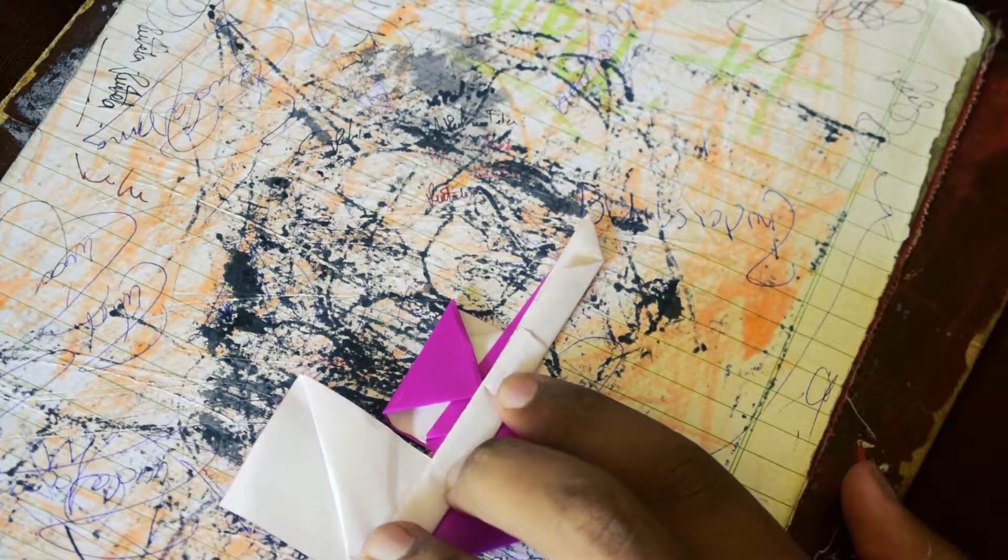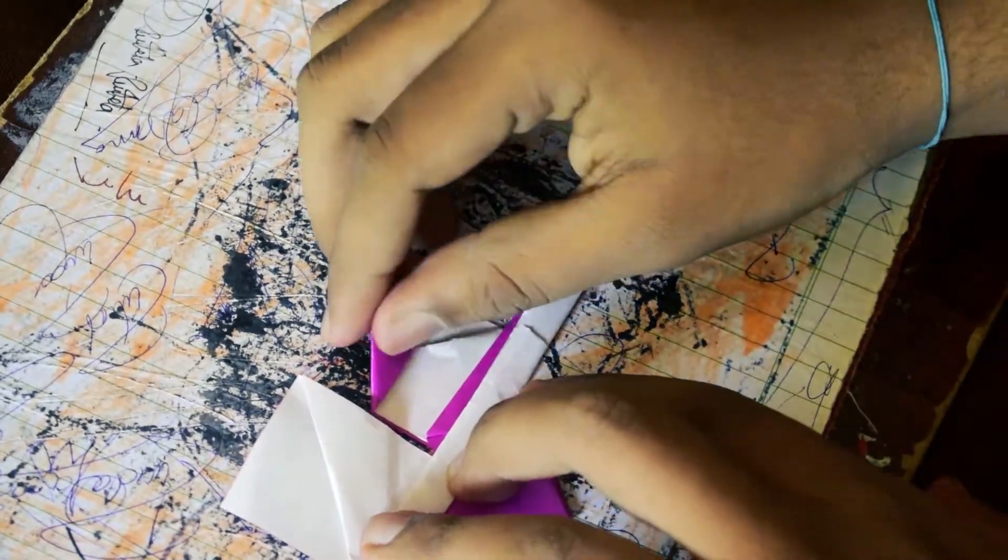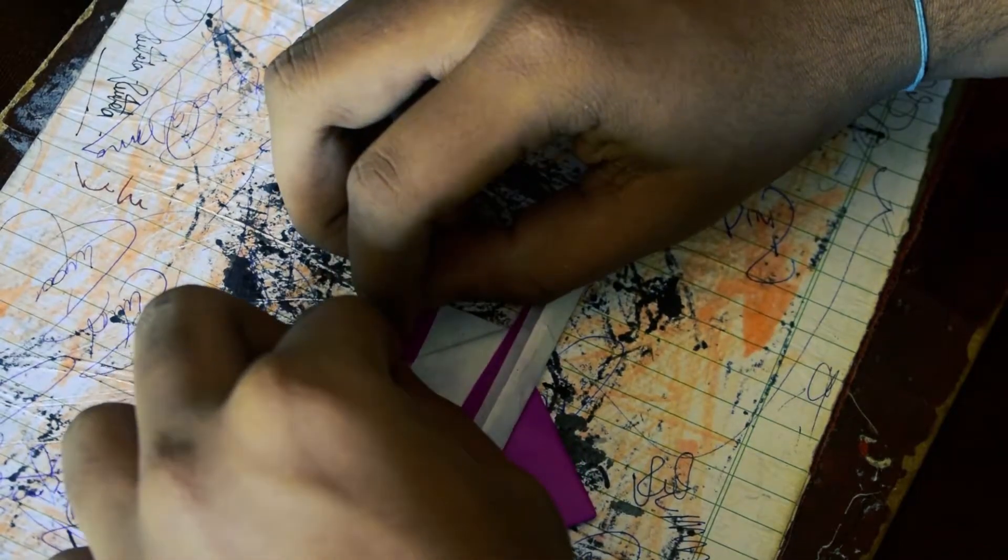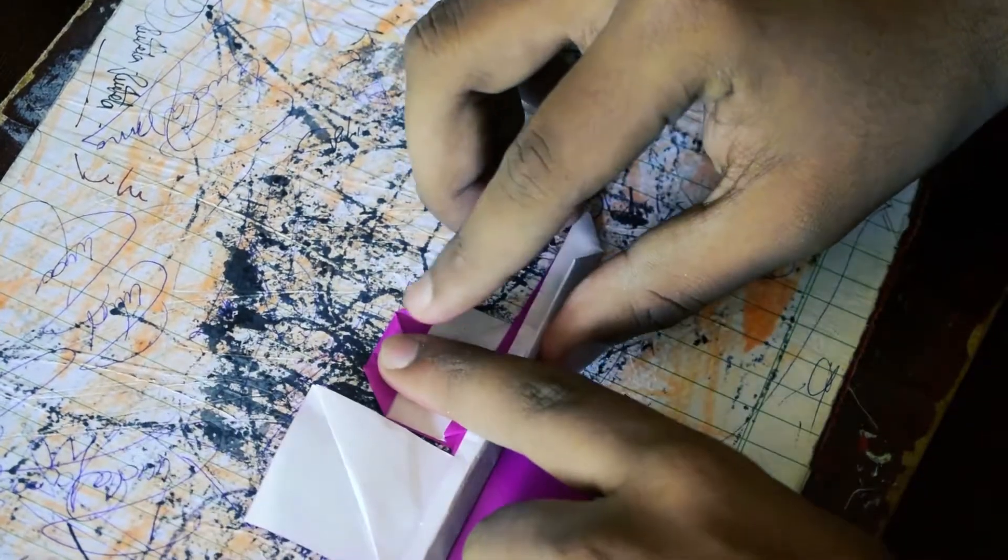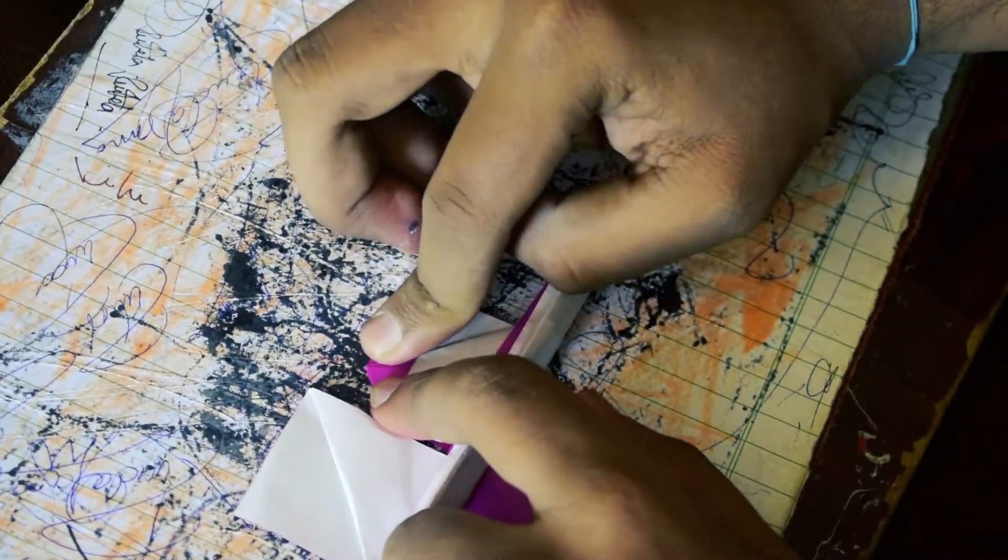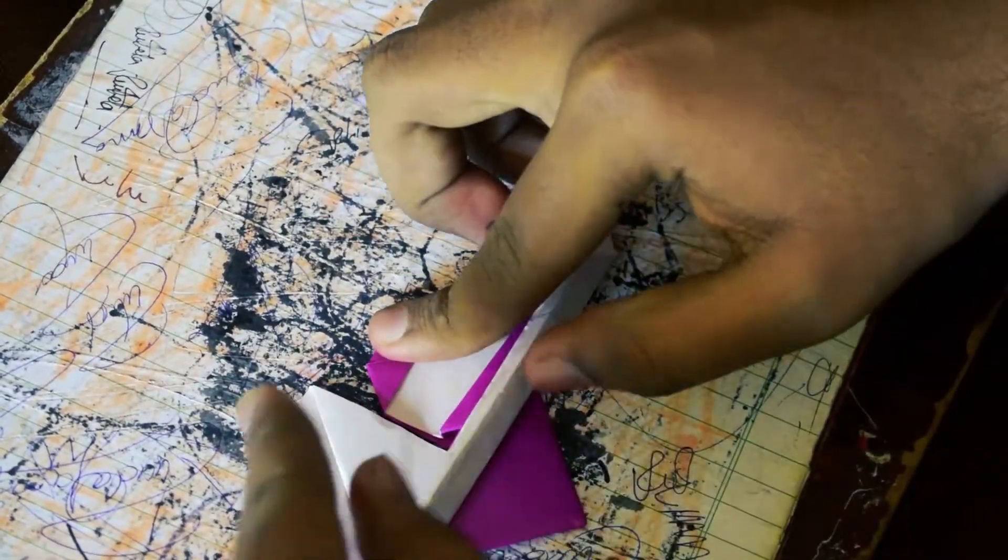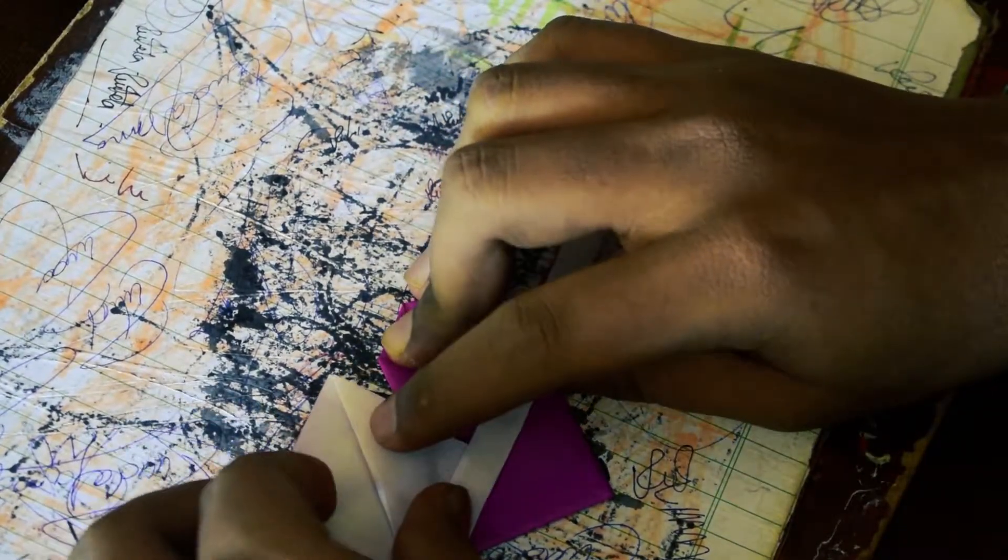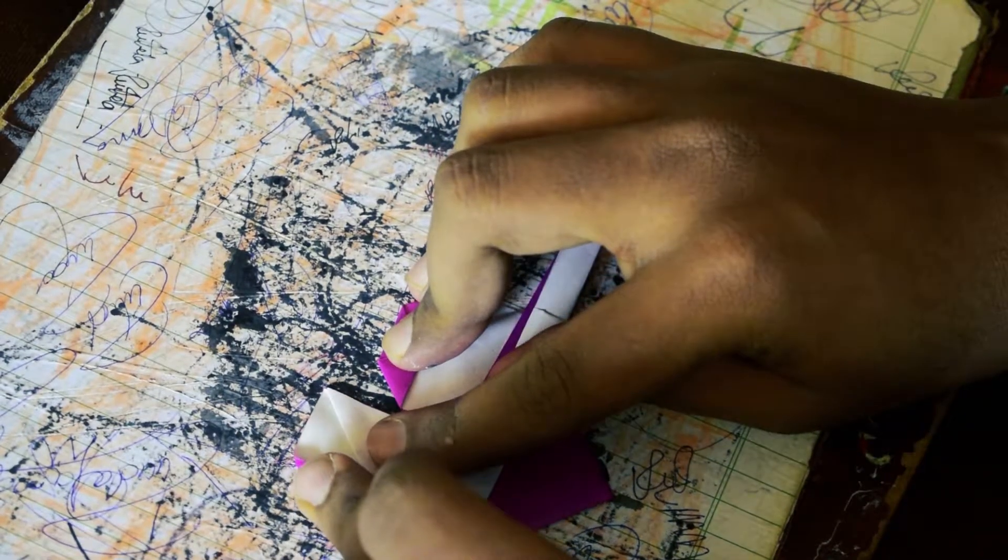Just don't fold it completely, just hold it a little bit there. We'll be doing the next step to it. As you can see, I'm making a small fold in the upward direction. This is the fold you have to make. It will be a little smaller.